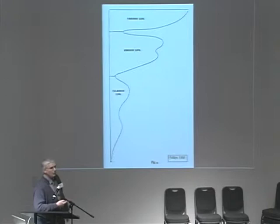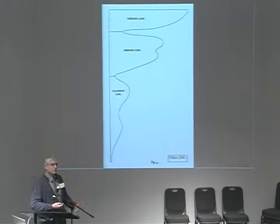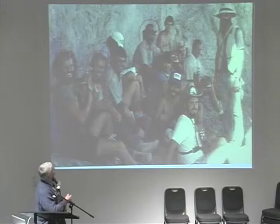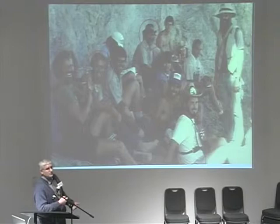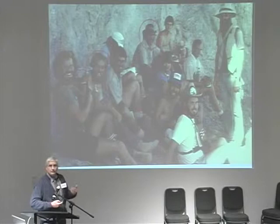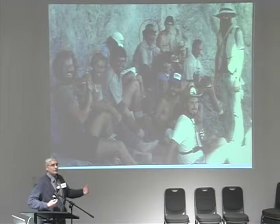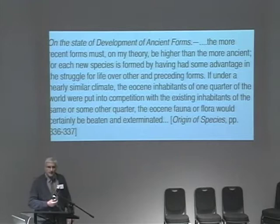Of course it's a model. Those of you who talk to geochemists will sometimes hear the expression 'a Caltech plot' — a plot of something against nothing. This is what I like to refer to as a Yale plot: a plot of nothing against nothing. Neither axis is labeled, but presumably this is geologic time and this is the level of diversity. I want to come back to how Phillips came about with this curve, because it's relevant to one of the themes I want to discuss: how we deal with the incompleteness of the geologic record, which is something Darwin was concerned about.